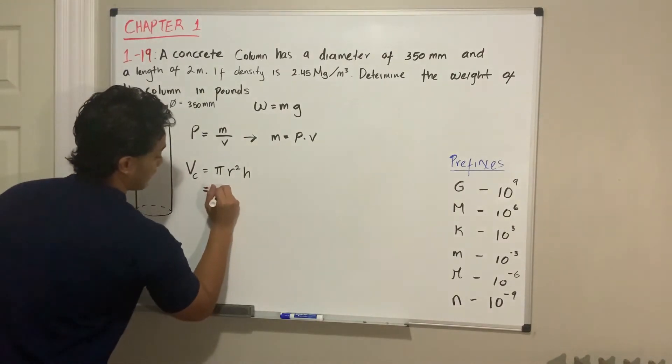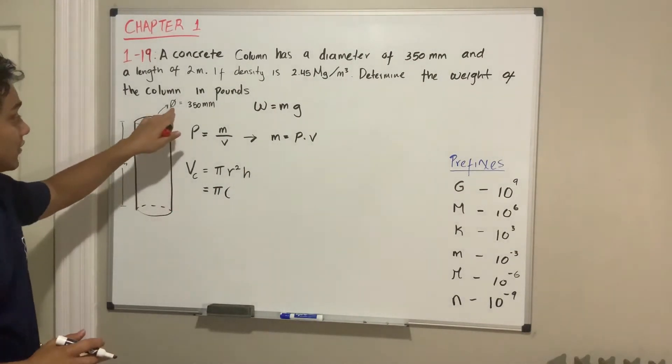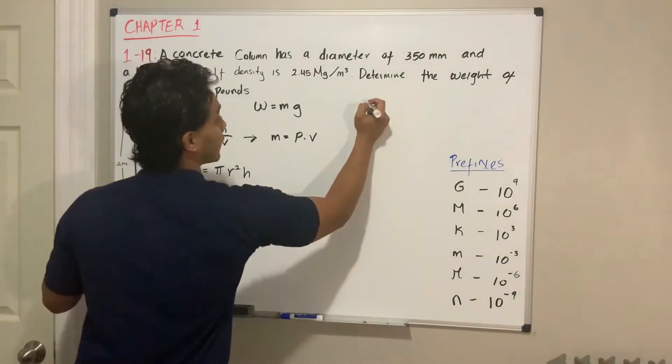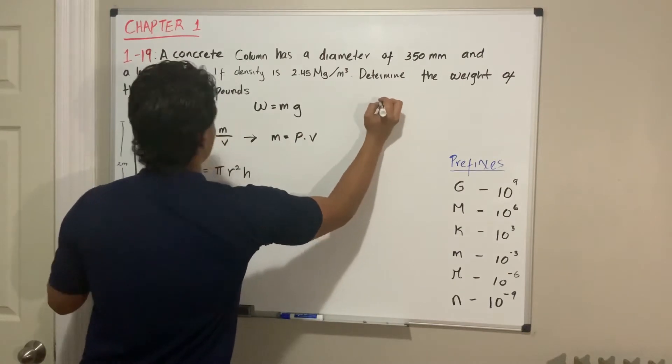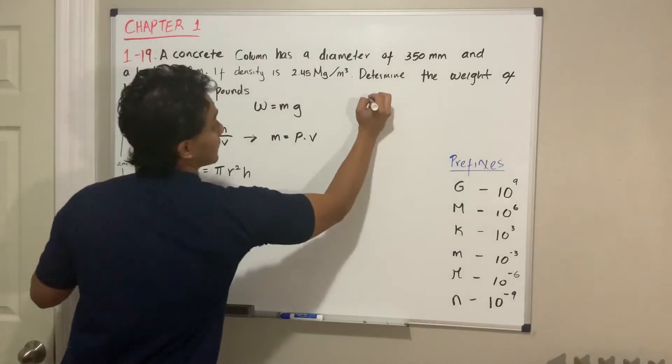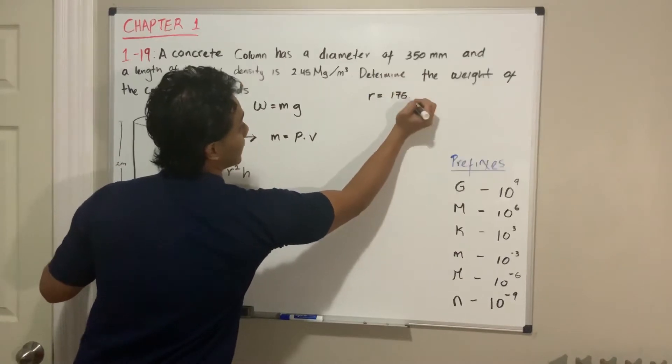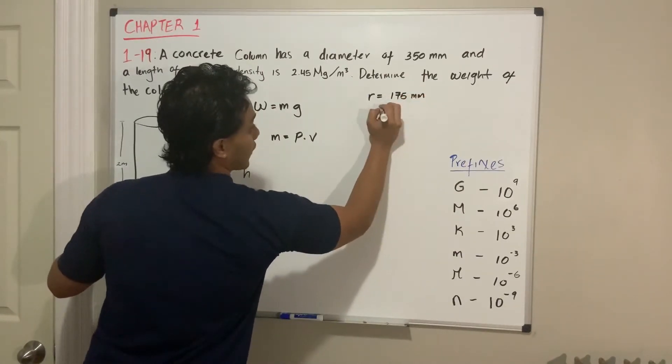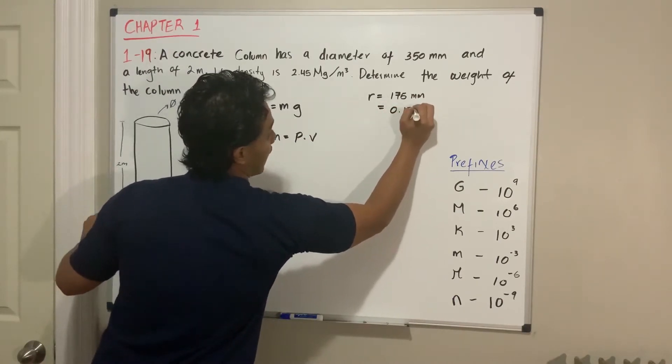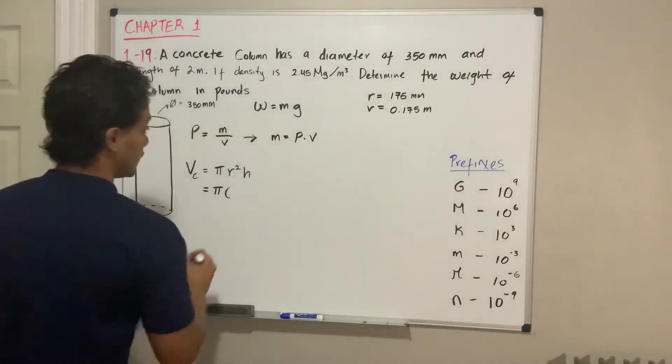It's gonna be pi multiplied by r. In the example they're giving us the diameter, so we will need to convert this. The radius is half of the diameter, so r equals 175 millimeters, which we can convert to 0.175 meters. That's the actual value of the radius.